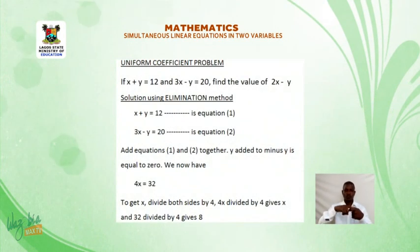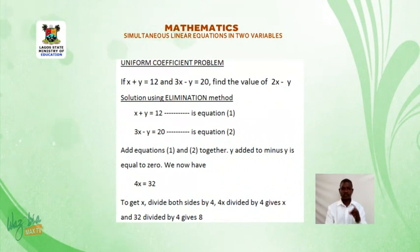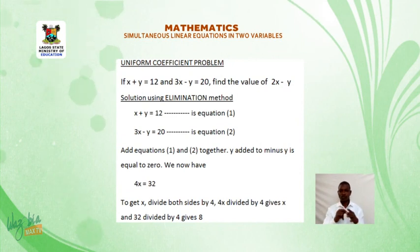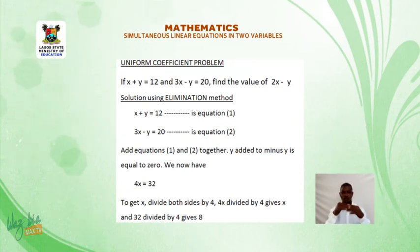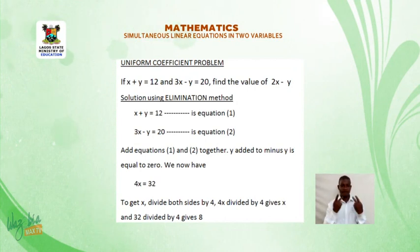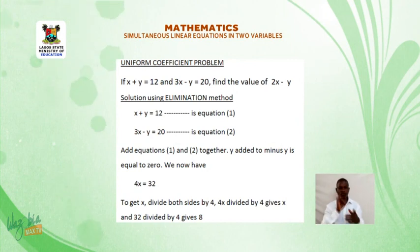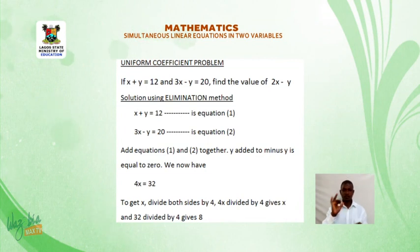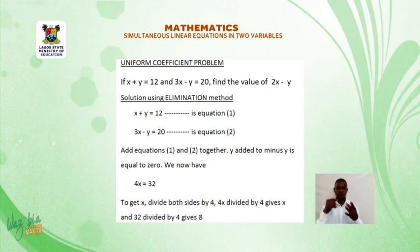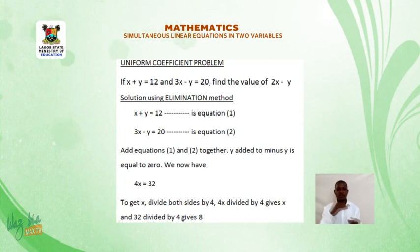Uniform coefficients problem. If x plus y is equal to 12, and 3x minus y is equal to 20, find the value of 2x minus y. Solution: Using elimination method. x plus y is equal to 12 is equation 1. Add equations 1 and 2 together.